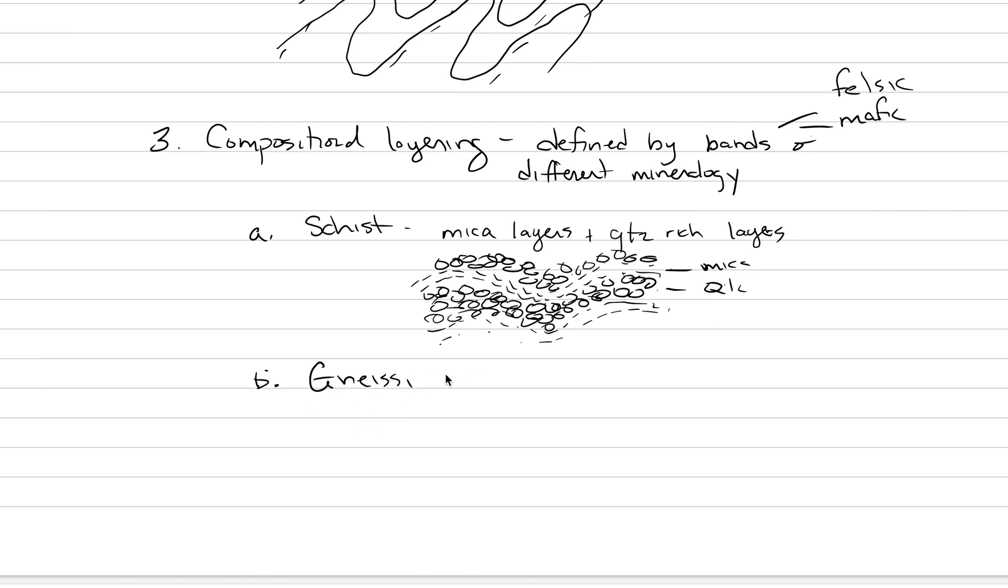Gneissic banding is the most famous of the compositional layers. This is the separation of felsic and mafic minerals in high-grade metamorphic rocks. The felsic minerals that we care about here, these are going to be quartzes and feldspars, primarily. And the mafic minerals that define the darker bands, these are our amphiboles, and our pyroxenes, and maybe our biotites.